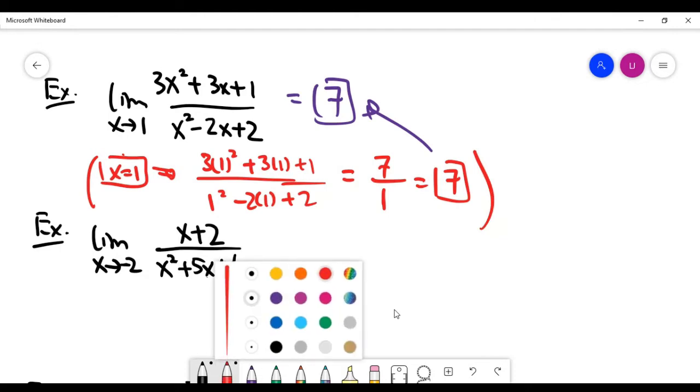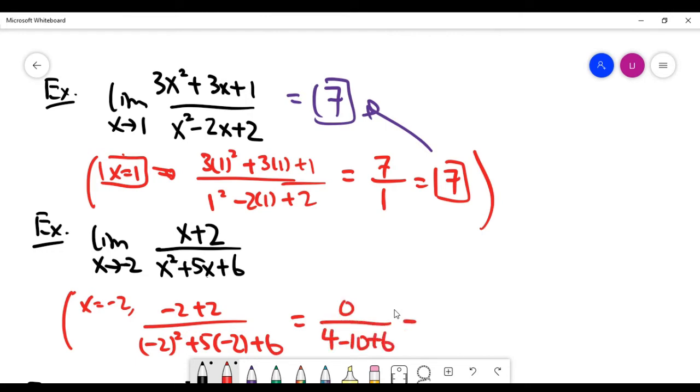However, let's look at this second example. When you replace x by minus 2, the top is minus 2 plus 2, the bottom is minus 2 squared plus 5 times minus 2 plus 6. And you see now the fraction becomes 0 over 4 minus 10 plus 6 equals 0 over 0. We have seen it a couple of times already, 0 over 0 is undetermined.